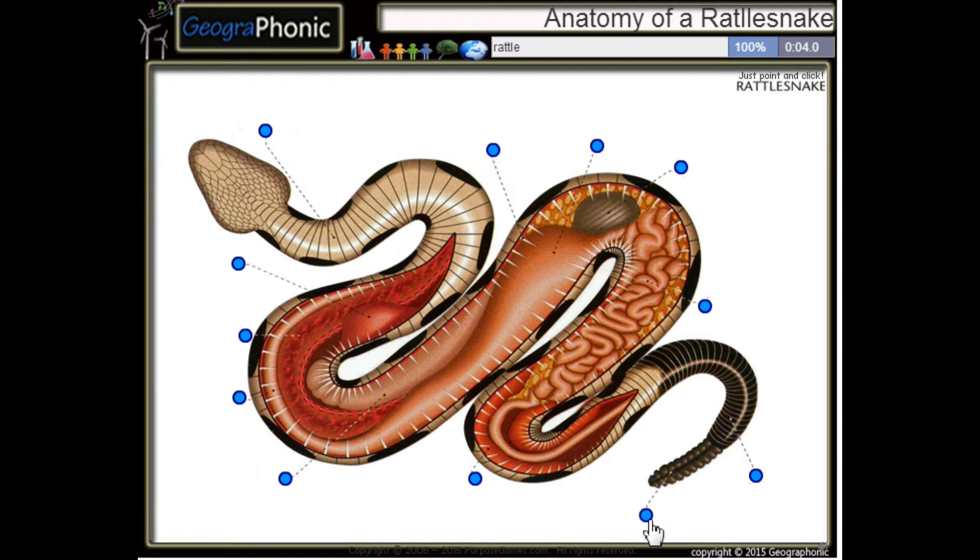This is the rattle of the snake. Here we see a belly scale. This is of course its tail. This is a rib, a single rib. This is the stomach of the rattlesnake.